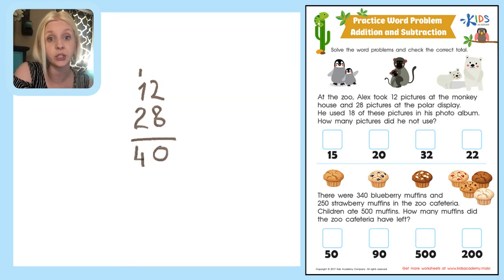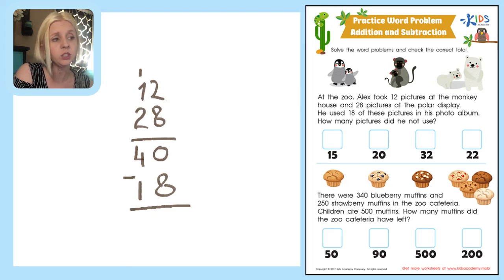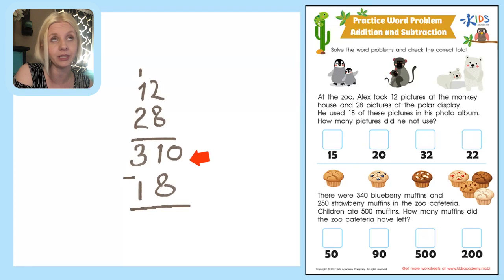He used 18 of these pictures in his photo album, so we have to subtract them because we want to know how many are left over. So 40 minus 18. Now, 0 minus 8 — you can't take 8 away from 0 because 0 is smaller. So we need to borrow from the 4, turning it into a 3, and add 10 to our 0. So 10 minus 8 is 2. Then 3 minus 1 is 2. So that's 22.